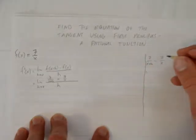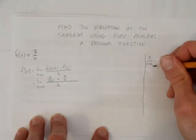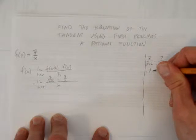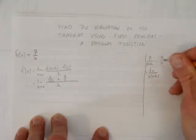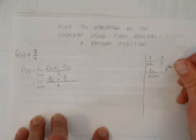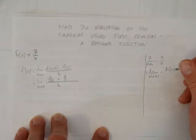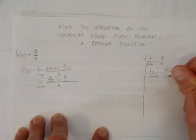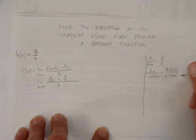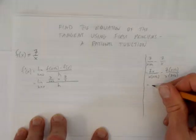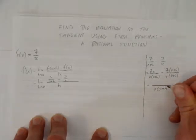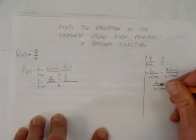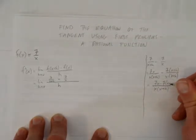I'm going to multiply this first fraction by x on the top and x on the bottom, and I'm going to multiply the second fraction by what it's missing, in this case an x plus h on the top and an x plus h on the bottom. And now I can put those denominators together. That is, I have a common denominator of x times x plus h, and on top I get 7x minus 7x plus h.